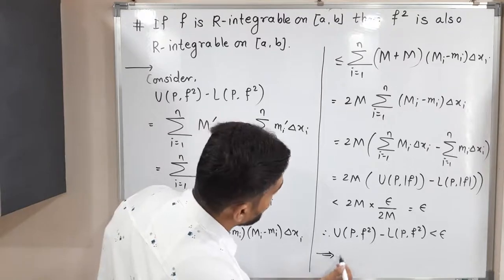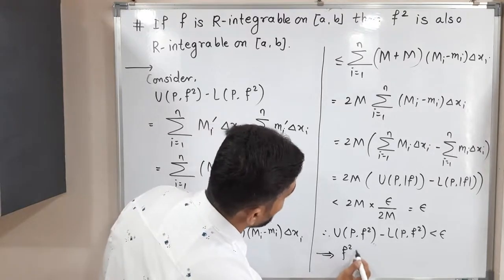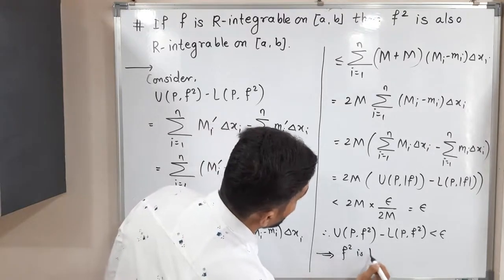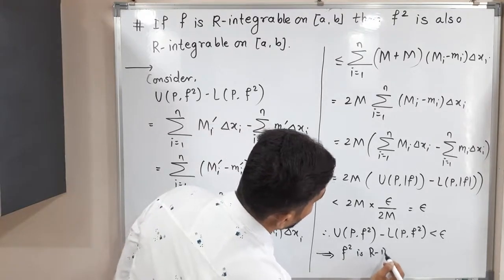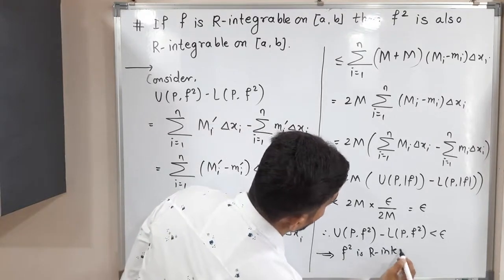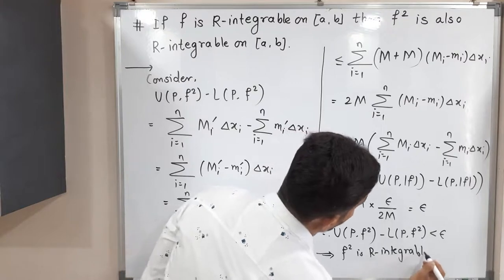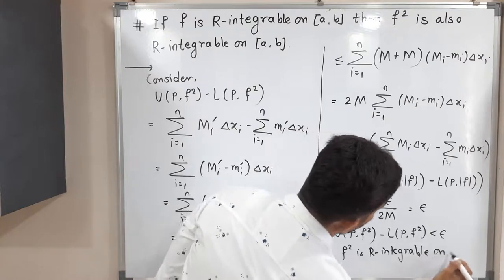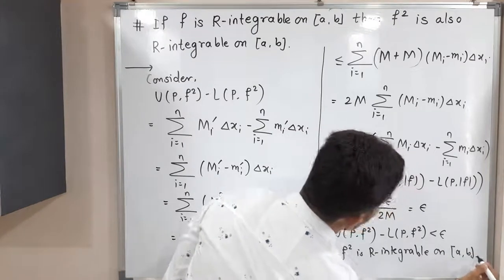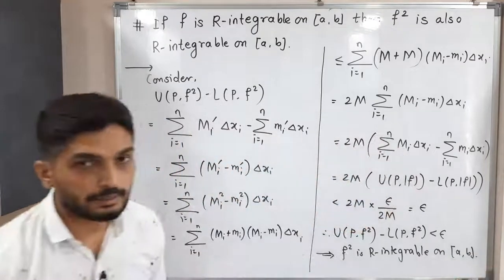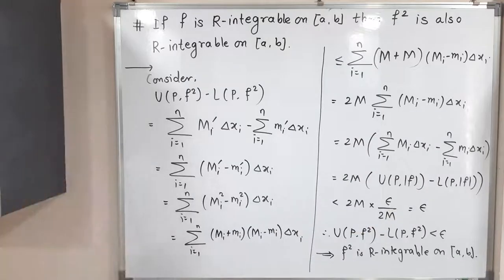Therefore, by the Riemann criterion, f² is Riemann integrable on closed interval [a,b]. In this way we have proved that if f is Riemann integrable on [a,b], then f² is also Riemann integrable on [a,b]. Thank you, bye bye.